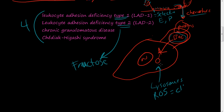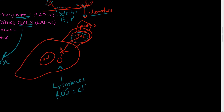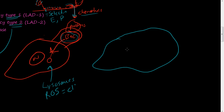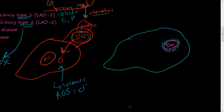Because the cell cannot produce reactive oxygen species to destroy the bacteria, you see lysosomes forming a granuloma around the bacteria inside the leukocyte. They form a shell or sphere around the bacteria — they're doing what they're supposed to do, gathering around it, but they just don't have the reactive oxygen species to destroy it. These formations are called granulomas inside the cell, and you can see them on examination.